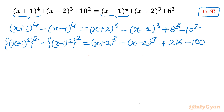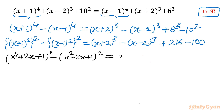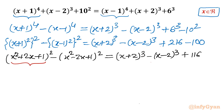Now I will use two identities. Let me write (x+1)² as x²+2x+1, and (x-1)² as x²-2x+1. Equal to (x+2)³ minus (x-2)³, and then it is 216 minus 100, which is 116. On the left hand side, if we presume the first square is 'a' and the second bracket is 'b', then it is an a²-b² formula.